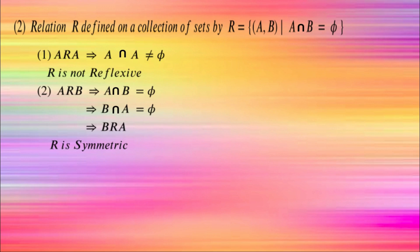For symmetry: if A is related to B, then A intersection B is empty. Since A intersection B is empty, B intersection A is also empty. Then clearly B is related to A. So R is symmetric.